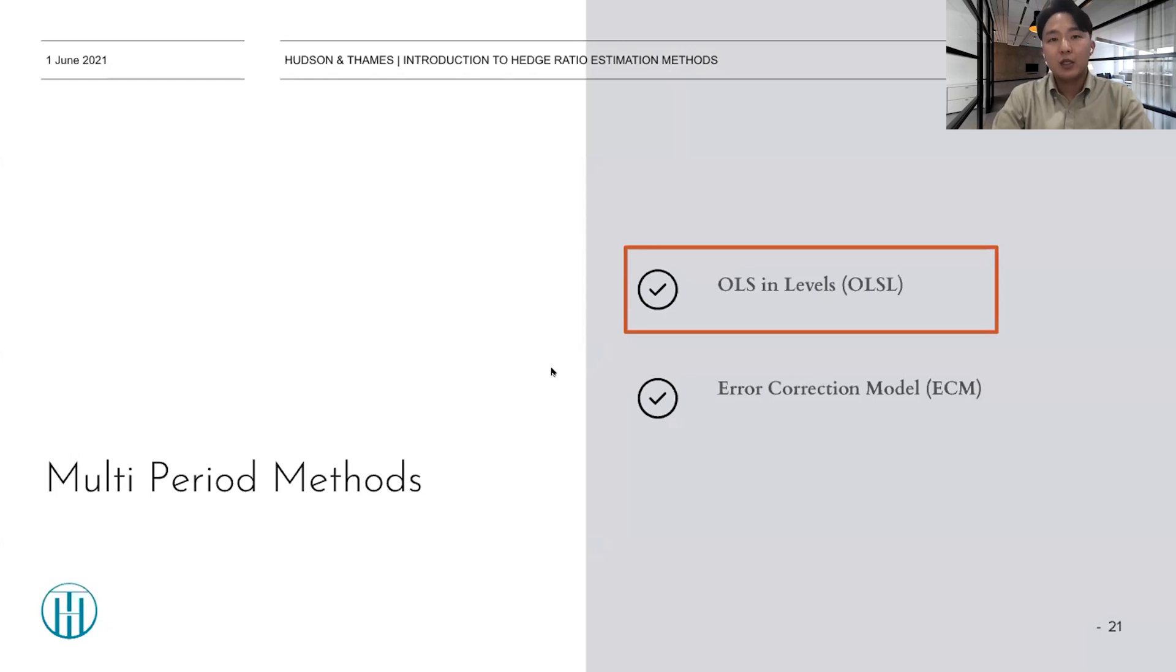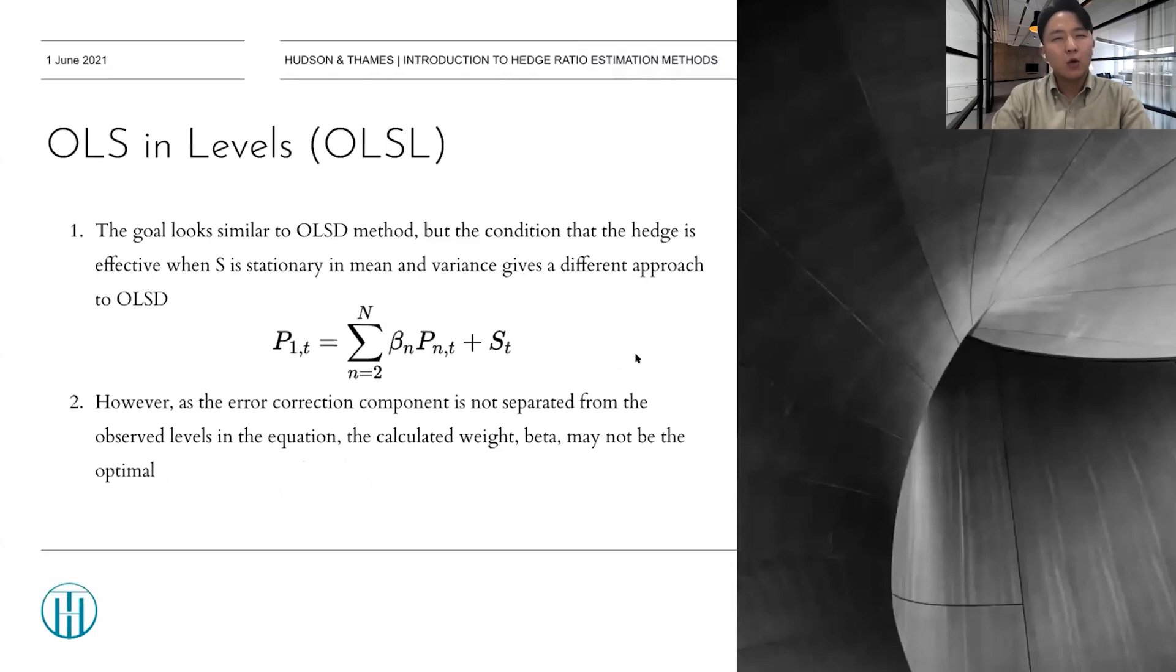Okay, so first, let's see the OLSL. The goal itself is similar to OLSD method, but the condition that the hedge is effective when S is stationary in mean and variance gives different approach to OLSD. However, as the error correction component is not separated from the observed levels in the equation, the calculated weight and beta may not be optimal. In other words, in the OLSD, in the single period method, the hedging error is EH, so the EH is not corrected over time. This is because of the specification in differences, which has removed all memory of the process.